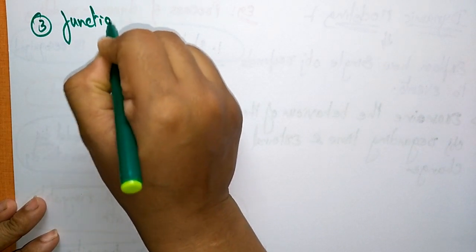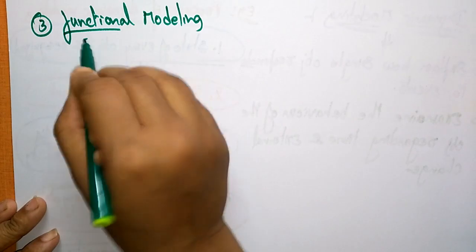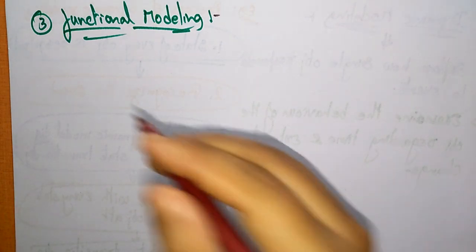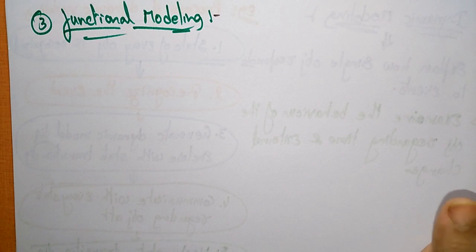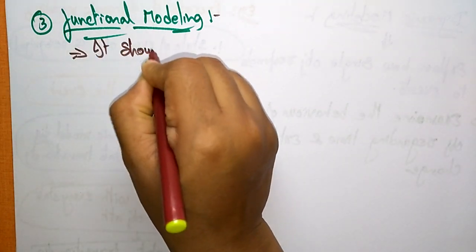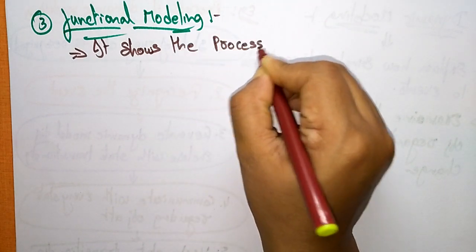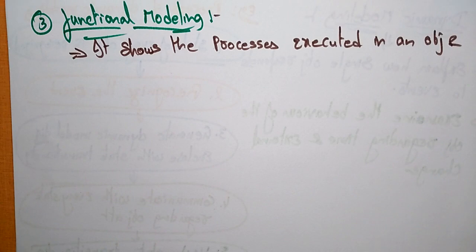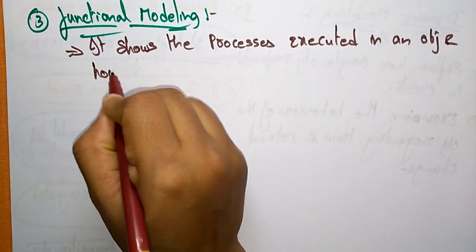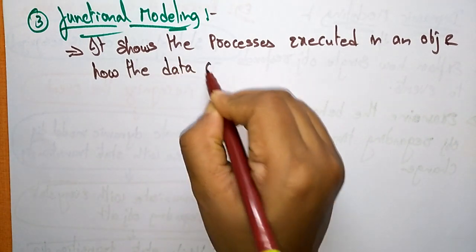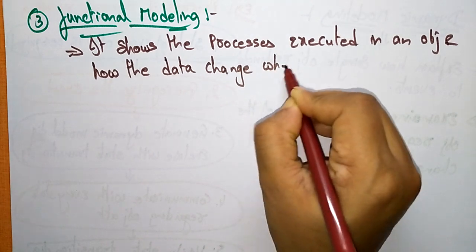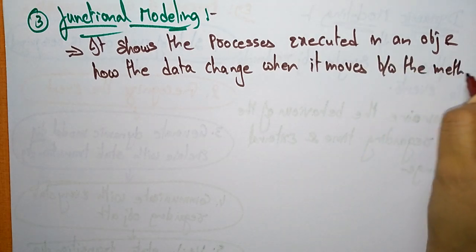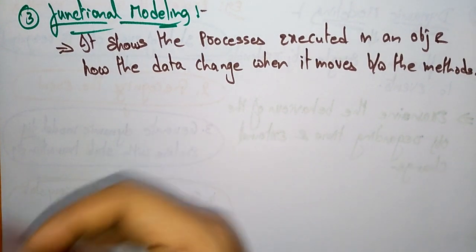The third technique is functional modeling. In object-oriented analysis, functional modeling is the last component. It shows the processes executed in an object and how the data changes when it moves between the methods.